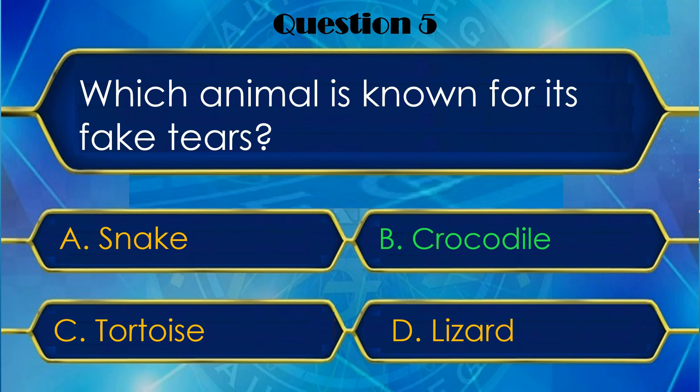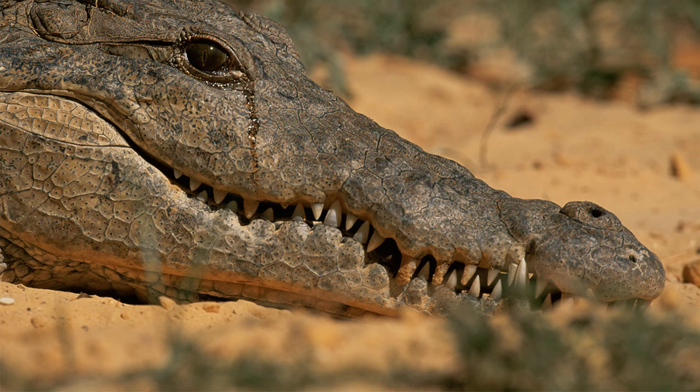Chaliye aapko kuch rochak batata hun about Crocodile. Jab Crocodile kuch khaata hai, kisi animal ko kill karne ke baad usko khaata hai, toh khaate time pe yeh kuch apni aankhon mein se aansu nikaalne shuru kar deta hai. Ek toh isne kisi animal ko maara, aur upar se ro raha hai — toh thoda awkward ho gaya na. Toh isi tarike se 'crocodile tears' jo hote hain, un vyakti ke liye use kiye jaate hain jo kisi ke loss hone pe, kisi ka nuksan hone pe, apne tears shed karta hai, par andar se bada khush hota hai.